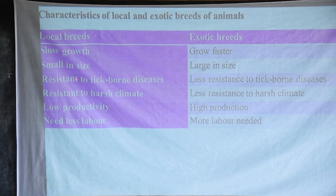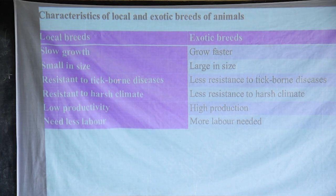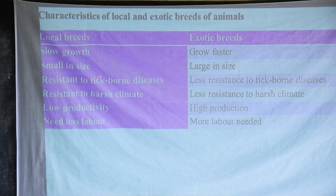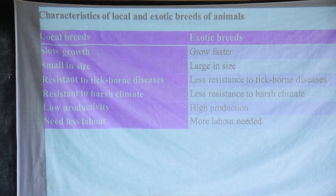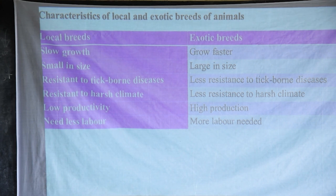Local breeds are resistant to tick-borne diseases — this is actually an advantage. Tick-borne diseases like east coast fever and red water are spread by ticks. You find that local breeds cannot easily be attacked by such diseases. But when you check exotic breeds, they have less resistance to tick-borne diseases and can be attacked by east coast fever, red water, and many others. So if you go for exotic breeds, you need the capacity to manage vaccination to avoid these diseases.